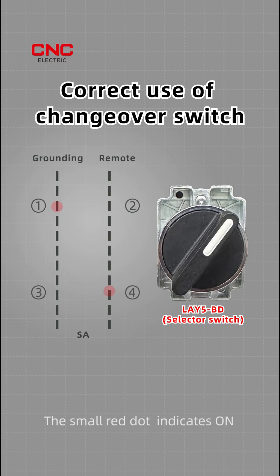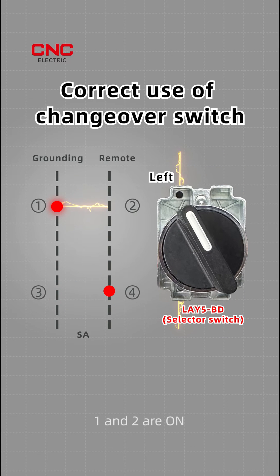The small red dot indicates on. For example, this red dot indicates that when the switch is turned to the right, 3 and 4 are on, and when turned to the left, 1 and 2 are on.